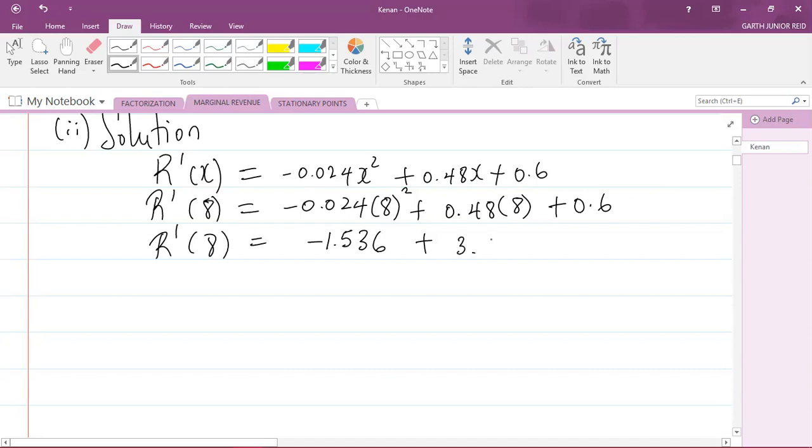That will give me negative 1.536 plus 3.84 plus 0.6. And if you put all of these values now into your calculator, you will get 2.90 to 3 significant figures.